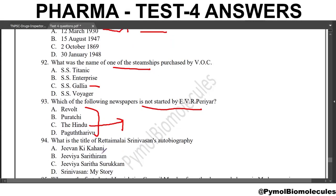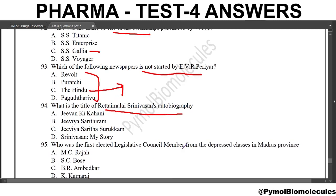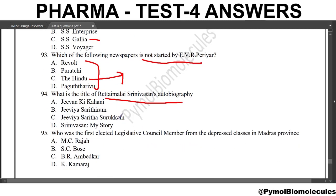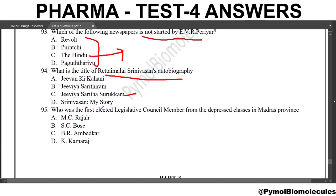Next question: what is the title of Rettaimalai Srinivasan's autobiography? The answer is G.P.A. Saritha Surukkam. Rettaimalai Srinivasan founded the Adi Dravida Mahajana Sabha in 1893 and became a member of the Madras Legislative Council in 1923. Next question: who was the first elected Legislative Council member from the depressed class in Madras province? The answer is M.C. Raja.